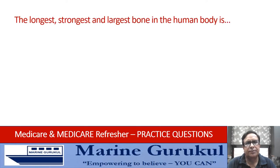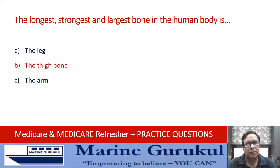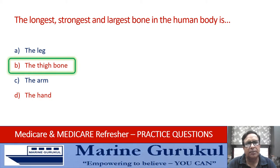The longest, strongest, and largest bone in the human body is: the leg bone, the thigh bone, the arm bone, or the hand bone? The answer is B — the thigh bone, which is the longest and the strongest bone of the human body.